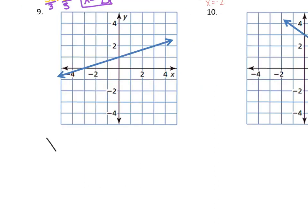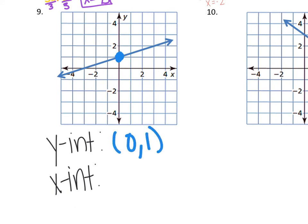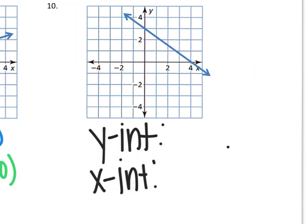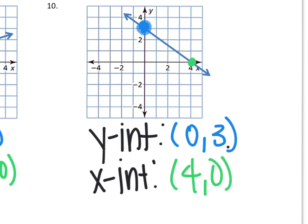For problems 9 and 10, we identify the y-intercept and x-intercept from the graphs. My y-intercept is where the graph crosses the y-axis, which is at positive 1, so the ordered pair is (0, 1). My x-intercept is where the graph crosses the x-axis, at negative 3, so that's (negative 3, 0). For problem 10, my y-intercept is where the graph crosses the y-axis at positive 3, giving (0, 3), and my x-intercept is where it crosses the x-axis at 4, giving (4, 0).